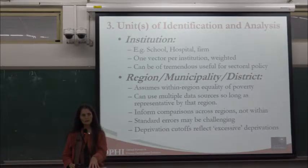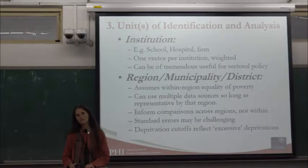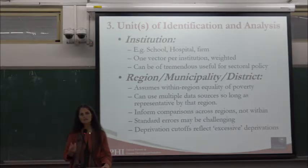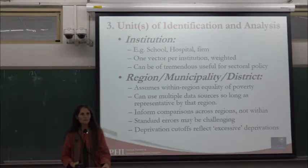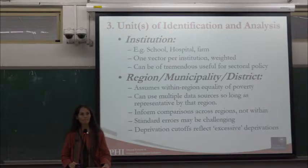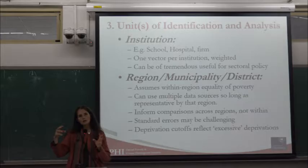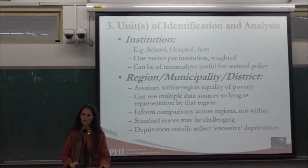Taking institutions or regions as the unit has implications for the rest of the steps. For example, in a municipality MPI that includes malnutrition, your deprivation cutoff changes in nature — you might use the percentage of children who are malnourished and need to distinguish across municipalities how much is too much. You might also combine different surveys representative to that level with different sample designs and errors per indicator, or combine administrative and satellite data, making confidence intervals much more complex to generate.